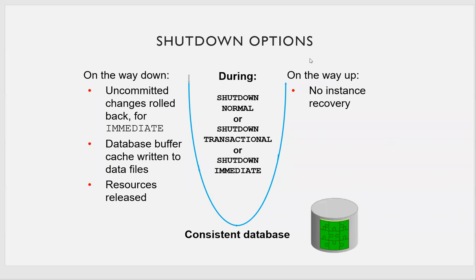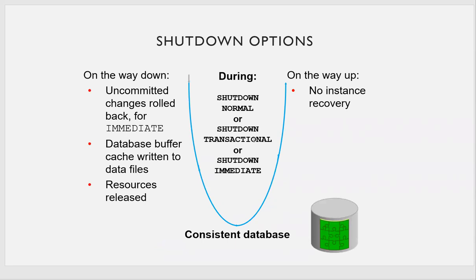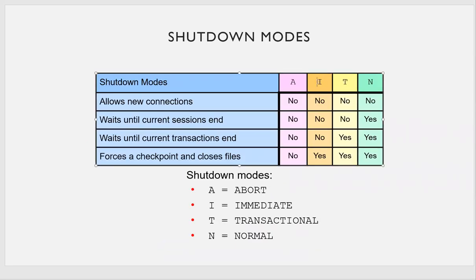During shutdown normal, transactional, and immediate: uncommitted changes are rolled back, the buffer cache is flushed to data files, resources are released, and the database is in a consistent state — so no instance recovery is needed on next startup. During shutdown abort or instance failure, the buffer cache is not flushed, uncommitted changes are not rolled back, and the database is inconsistent — instance recovery using online redo logs and undo segments is required.